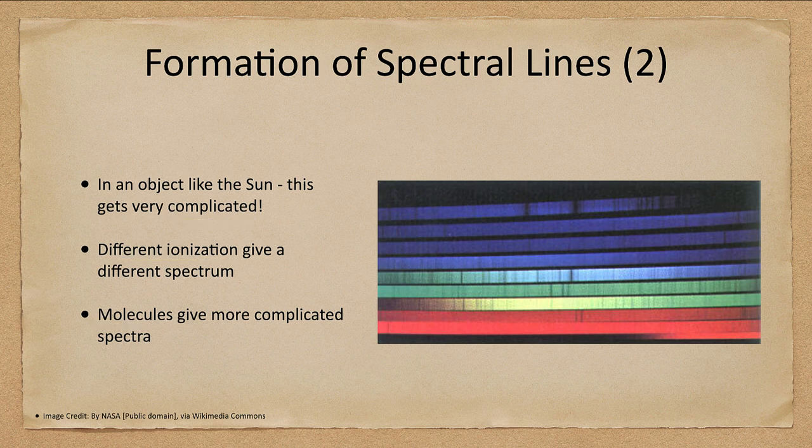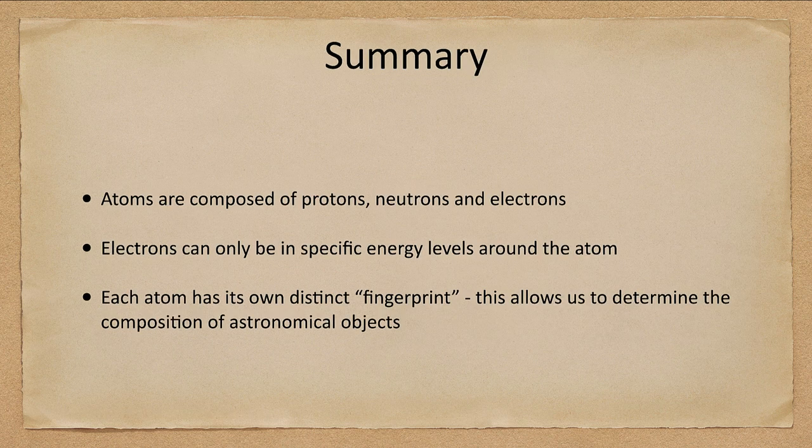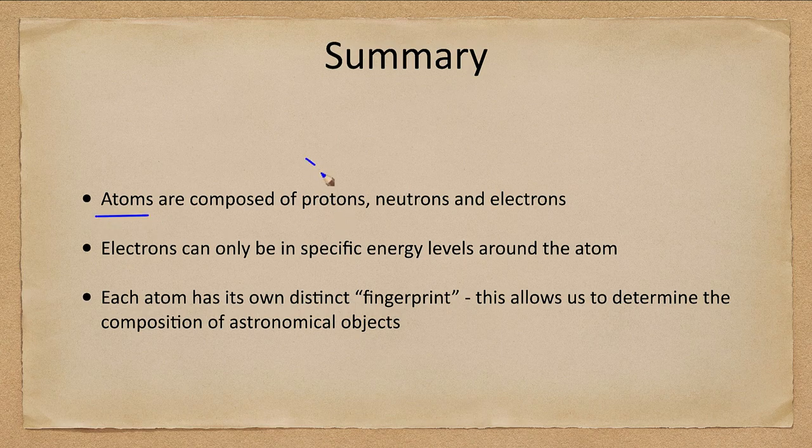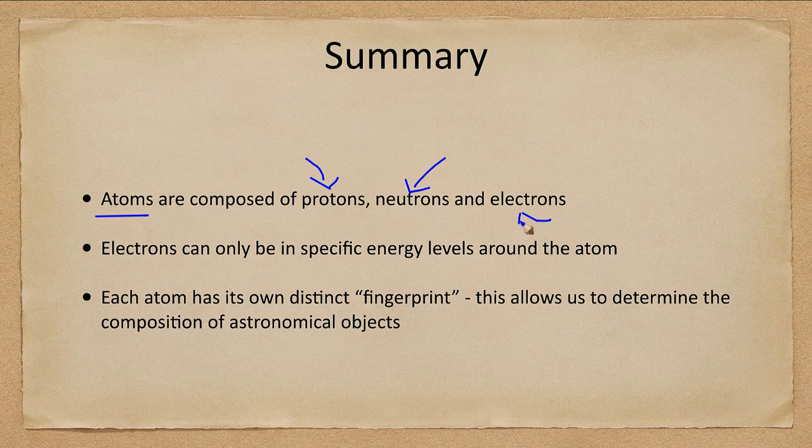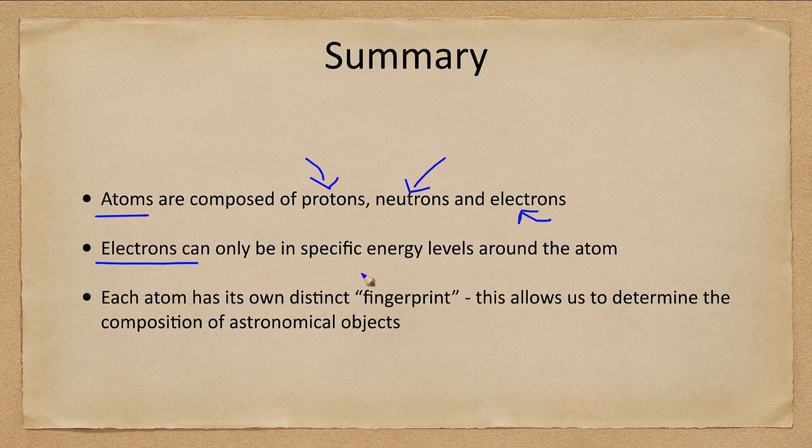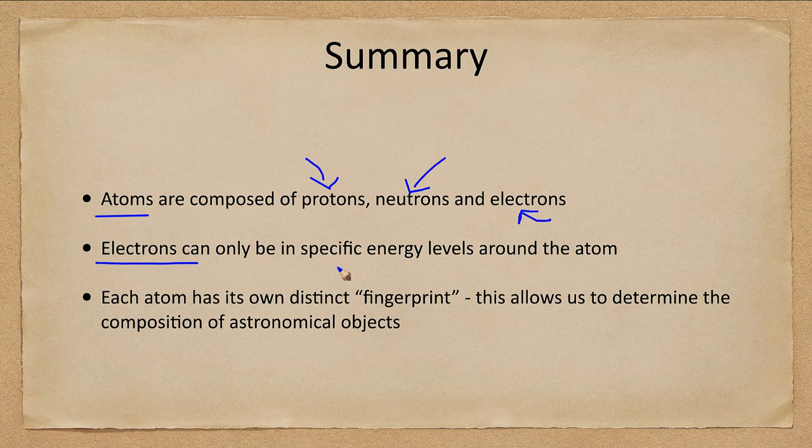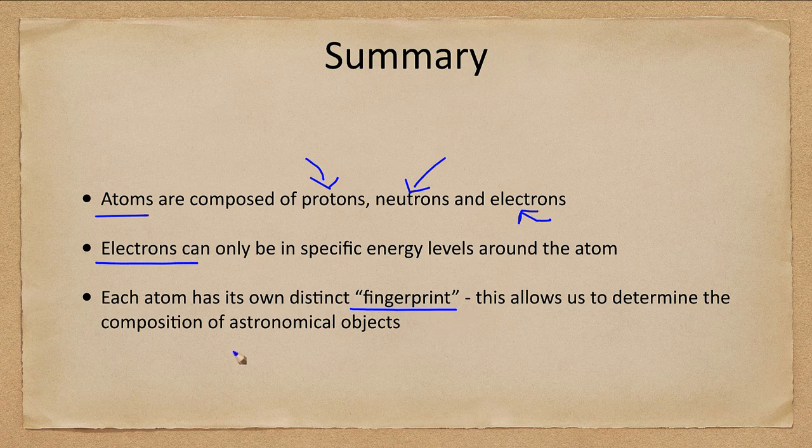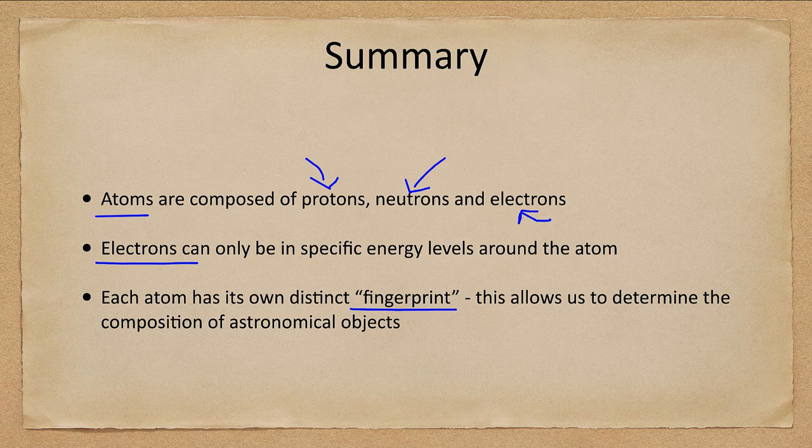So let's go ahead and finish up here with our summary. And what we looked at is atoms are composed of the protons and neutrons, which make up the nucleus, and the electrons which orbit around. The electrons can only be in very specific energy levels around the atom. So they can't be in just any place, they have to be in one of those specific energy levels. And they can transfer between them, either giving off or absorbing energy. And this gives each atom its own distinct fingerprint and allows us to determine the composition of various objects in astronomy.